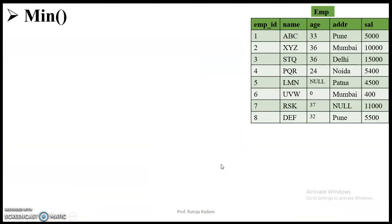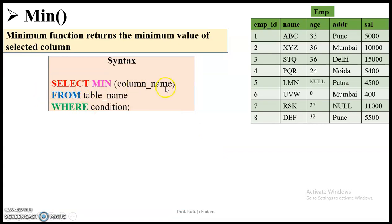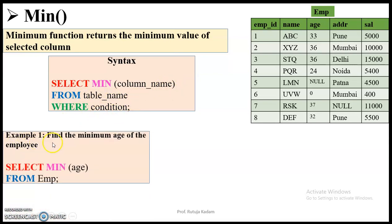Now let us study the MIN function. The minimum function will return the minimum value of the selected column. The syntax is: SELECT MIN(column_name) FROM table_name WHERE condition. The first example is to find the minimum age of the employee. The query is SELECT MIN(age) FROM employee. We go to the age column — we will not consider null — and the minimum value is zero. So the output will be zero.